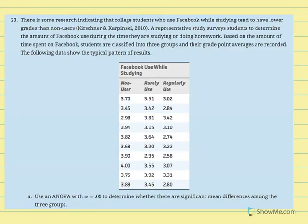Number 23: Research indicates that college students who use Facebook while studying tend to have lower grades than non-users. A study surveys students to determine the amount of Facebook use during study time. Based on time spent on Facebook, students are classified into three groups — non-users, rarely use, and regularly use — and their GPAs are recorded. We'll use ANOVA with alpha 5% to determine whether there are significant mean differences among the three groups.